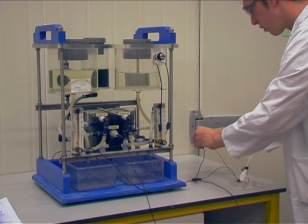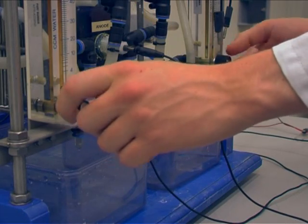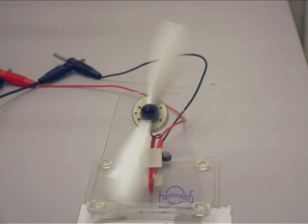We connect a small motor to our machine. When we open two valves, we let salt water and fresh water flow through the machine and the motor starts running.